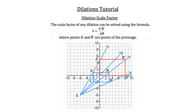For a reduction, we draw a rectangle between the center of dilation X and the original image rectangle ABCD. To draw that reduction, I'll start at a point along line A — anywhere between the center of dilation and the original rectangle. From there I draw a line straight down from line A to line C.